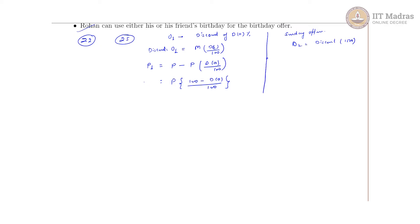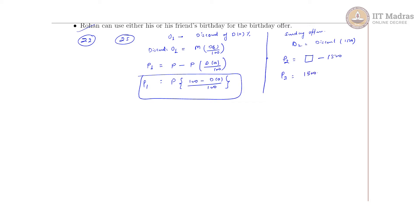Now for the second offer: if the payable amount qualifies, we reduce 1500, giving payable amount P2. So P2 equals the purchase amount P minus 1500. If P is 15,000, then applying Offer two directly gives 15,000 minus 1500. Do not confuse the P used in each offer context — these are two separate cases.